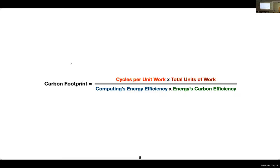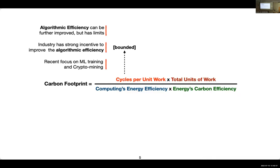To avoid the problem of different projections suiting different narratives, we set aside estimates and look at fundamental trends that will determine the future of sustainable computing. The carbon footprint of computing can be computed as the total work done divided by computing's carbon efficiency. The total work done equals cycles per unit work times total units of work — cycles per unit work is also termed algorithmic efficiency. There have been massive increases in algorithmic efficiency over the years, and there are more avenues for improvement, with strong industry incentive to pursue them. However, algorithmic efficiency is bounded — you cannot do work without consuming at least some cycles.